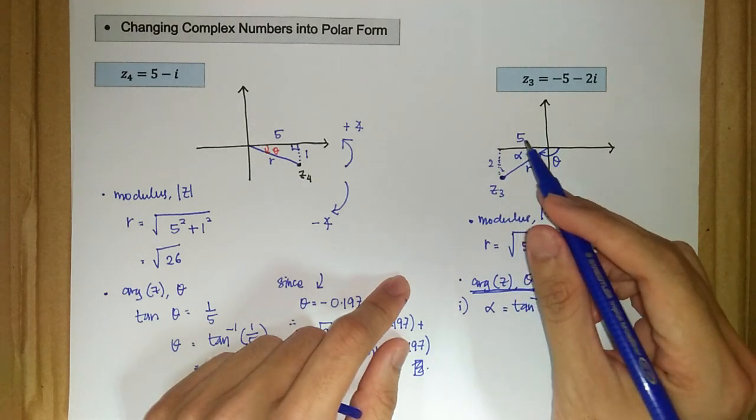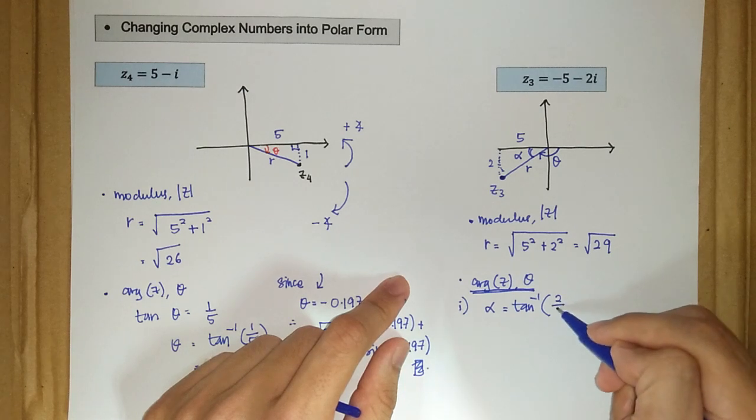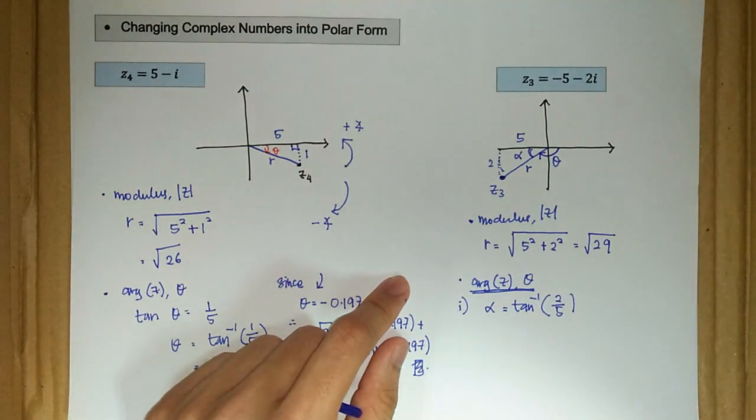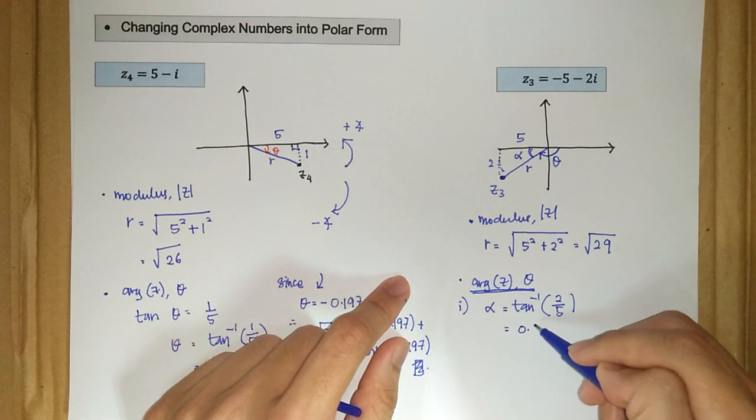So we have 2 over 5 here, and it takes the value of 0.38 radian.